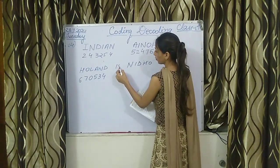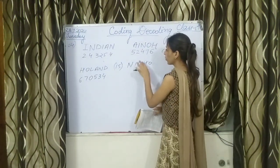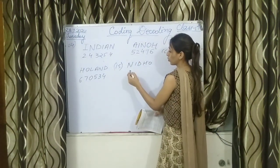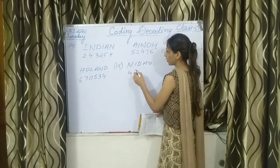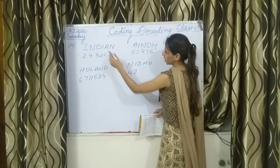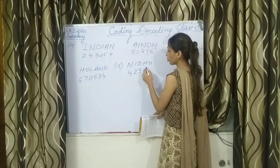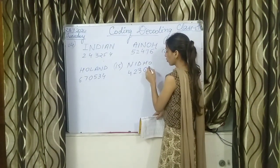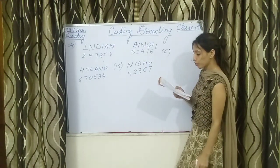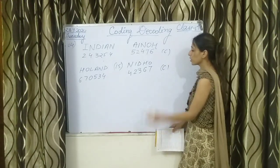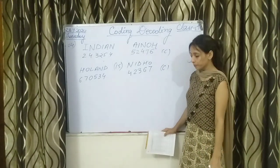The next one is question number 15 — what will be the coding? N is 4, I is 2, D is 3, H is 6, O is 7. That means the answer is 42367. The same option C is correct. Have you all got it?